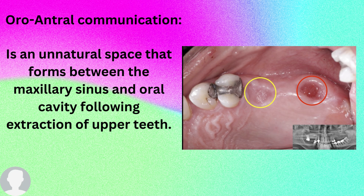So always, when a patient wants to extract upper posterior teeth — whether the upper six or upper seven — we need to ask them to take an OPG (orthopantomogram) in order to see how close the teeth are to the maxillary sinus.